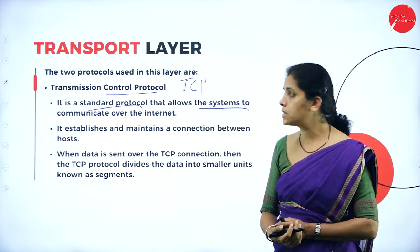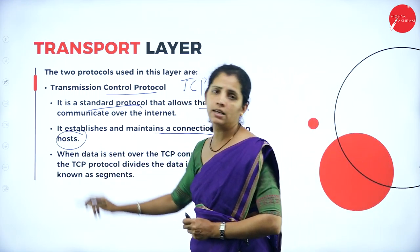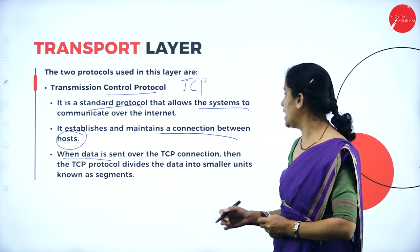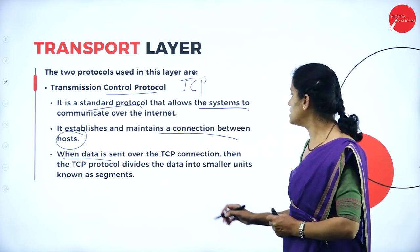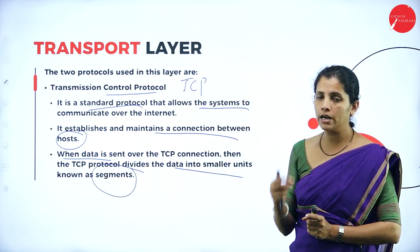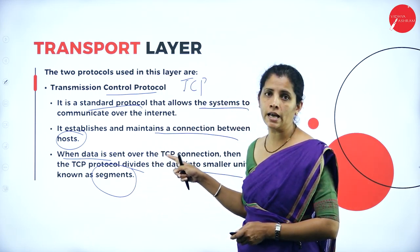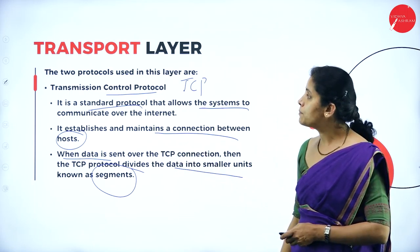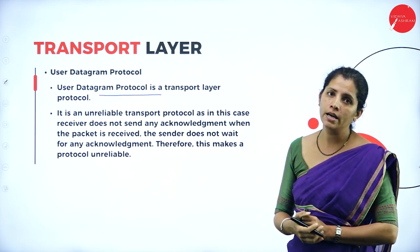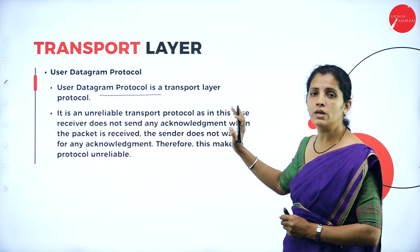TCP is a standard protocol that allows systems to communicate over the internet. It establishes and maintains connections between hosts — devices or computer systems. When data is sent over a TCP connection, TCP divides the data into smaller segments, providing a connection-oriented and reliable connection. UDP (User Datagram Protocol) is a transport layer protocol that is connectionless — it does not provide any acknowledgement.